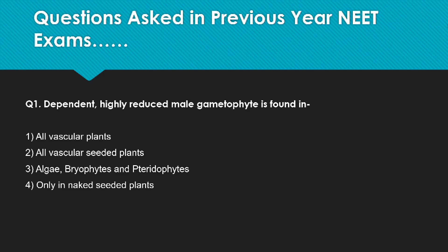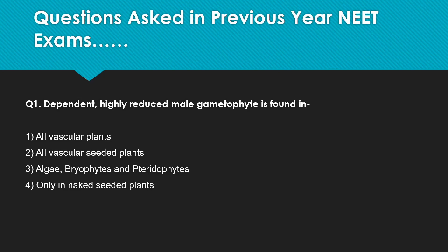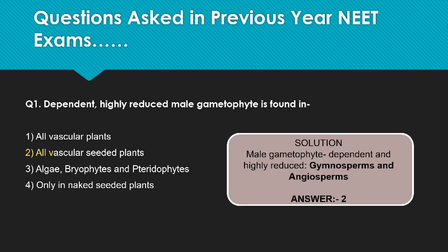Looking at the options: the first option says all vascular plants, which would include pteridophytes, gymnosperms and angiosperms. But pteridophytes should not be included, so this is incorrect. The second option says all vascular seeded plants, which includes gymnosperms and angiosperms — so this answer is correct. The third option includes algae, bryophytes and pteridophytes, which is wrong. The fourth option says only naked seeded plants, meaning gymnosperms only — but it should be both gymnosperms and angiosperms, so this is wrong. The correct answer is option 2: all vascular seeded plants.